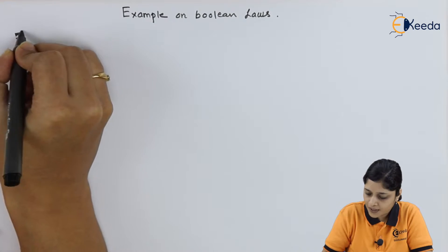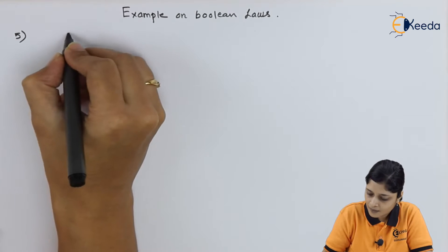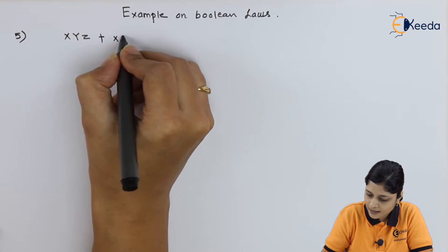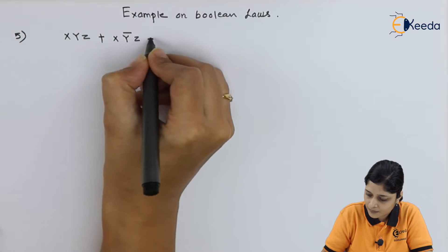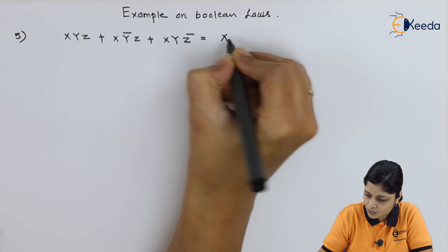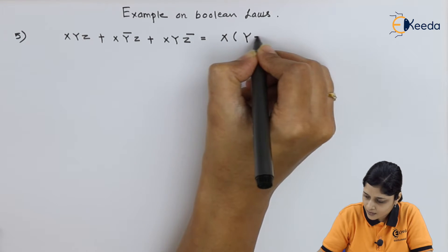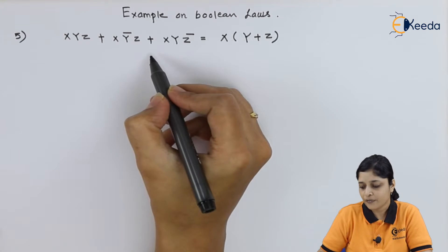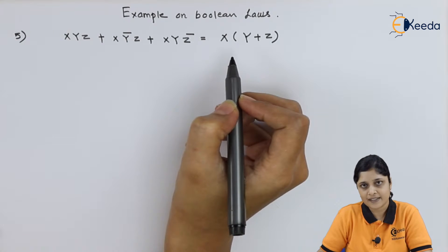Your 5th example is xyz plus xy bar z plus xyz bar equals to x in bracket y plus z. You have to prove left hand side equals to right hand side.